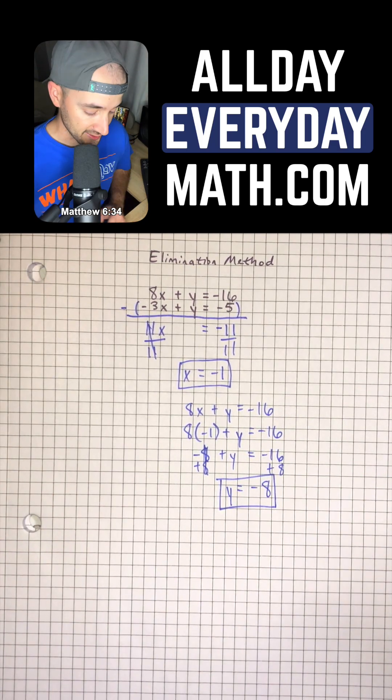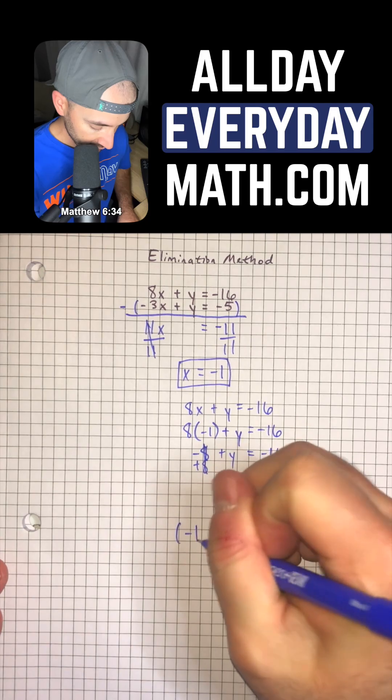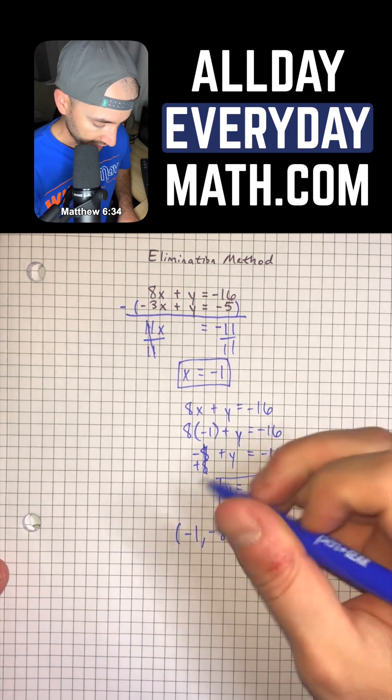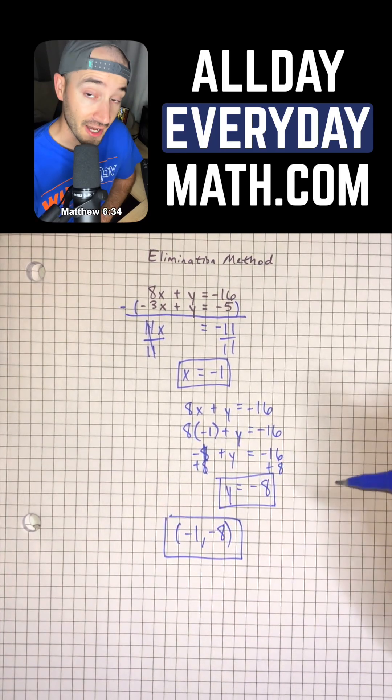So our full solution to this system is negative 1 comma negative 8. And that would be our final answer.